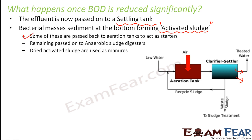The remaining sludge is passed on to the anaerobic sludge digesters. Here, different types of microorganisms help to break down the activated sludge. Some activated sludge can also be dried and used as manure because it is very rich in nutrients like nitrogen and phosphates, which help in better growth of plants.